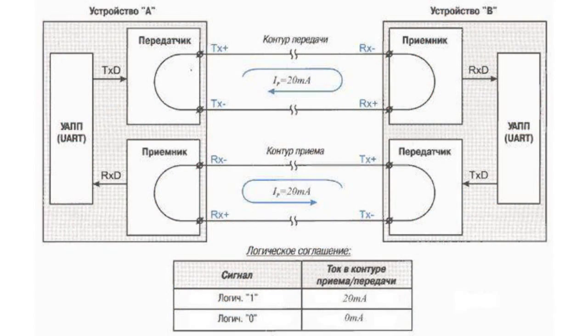According to the digital current loop standard, zero current stands for a low level or logic zero, and a signal present stands for a high level or logical one.